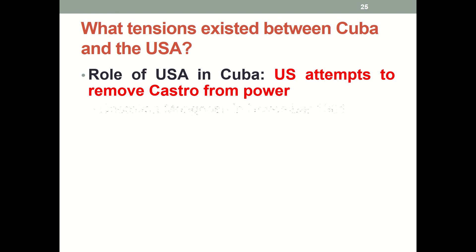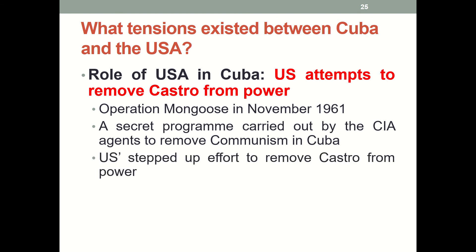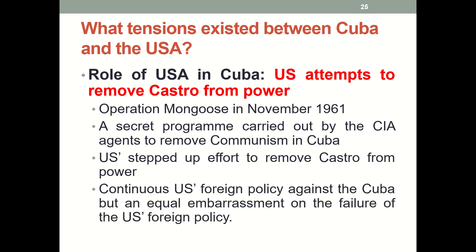The United States didn't give up. They tried again via Operation Mongoose in November 1961, a secret program carried out by CIA agents to remove communism in Cuba. This was a sign that the USA was stepping up efforts to remove Castro from power. The continued US foreign policy failures were an equal embarrassment for US foreign policy.